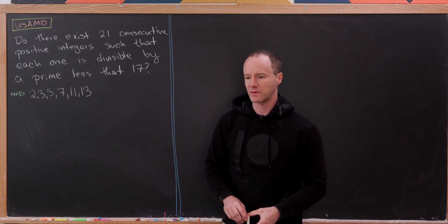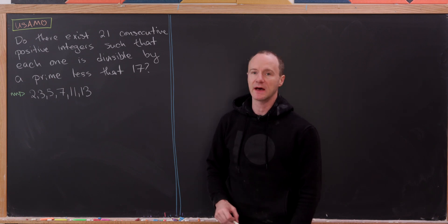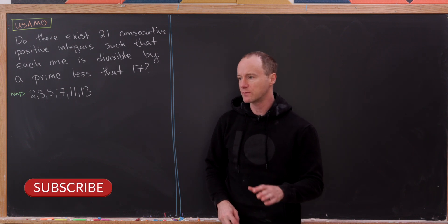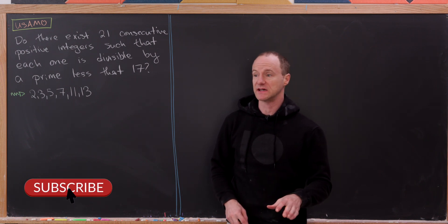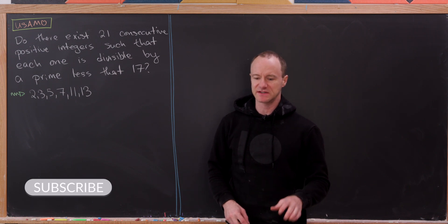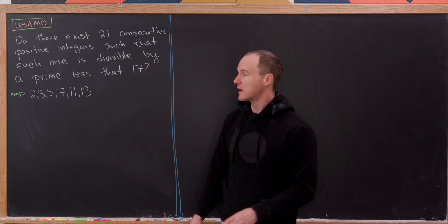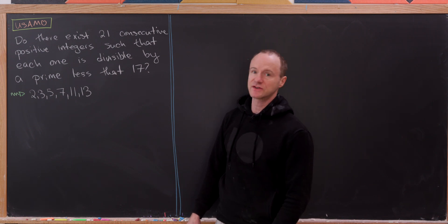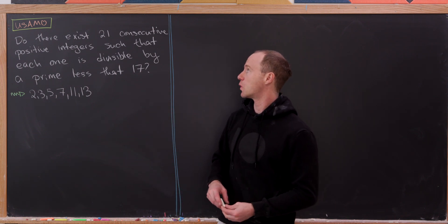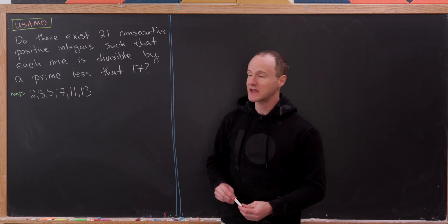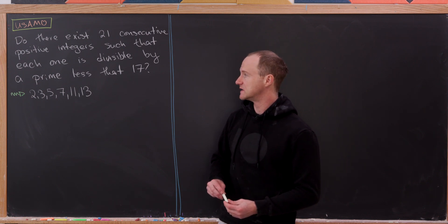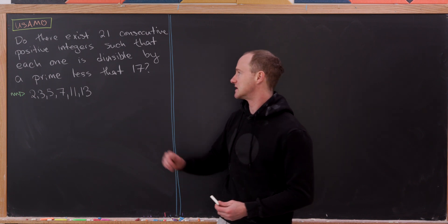Today we've got a nice number theory problem from the USA Math Olympiad. It involves a really important theorem for math contests, but let's maybe discover the need for that theorem instead of stating it right away. Our goal is to answer the following question: do there exist 21 consecutive positive integers such that each one is divisible by a prime less than 17?